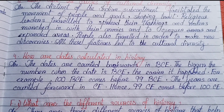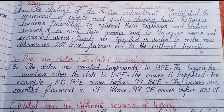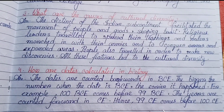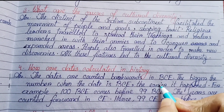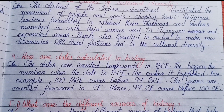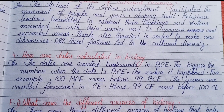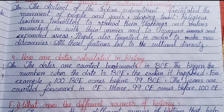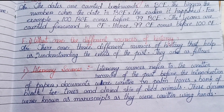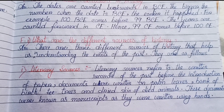Number four: how are dates calculated in history? Dates are counted backwards in BCE — the bigger the number in BCE, the earlier it happened. For example, 100 BCE comes before 99 BCE. The years are counted forward in CE, so 99 CE comes before 100 CE.